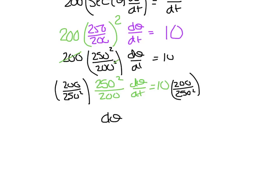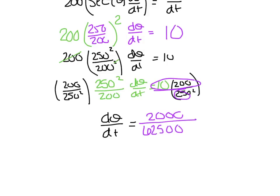Multiplying both sides by 200/250², we get dθ/dt = 2000/62500. Reducing: 2000/62500 = 20/625 = 4/125 radians per second. And there you have it — our second angle problem. The neater you keep your details, the easier this will be.